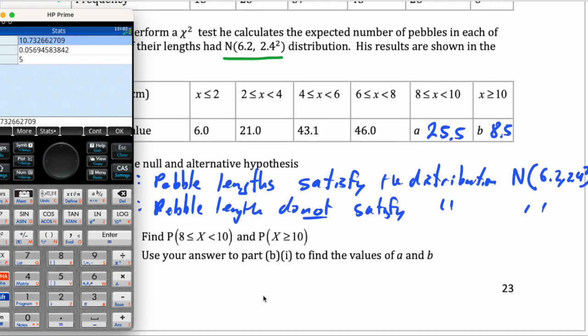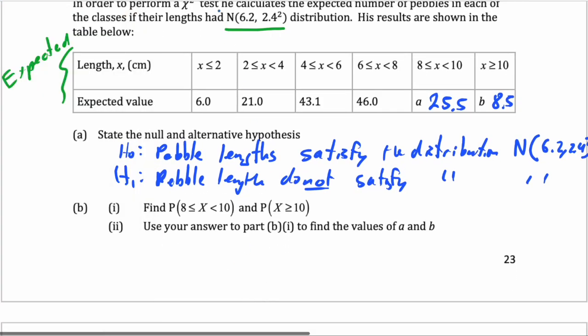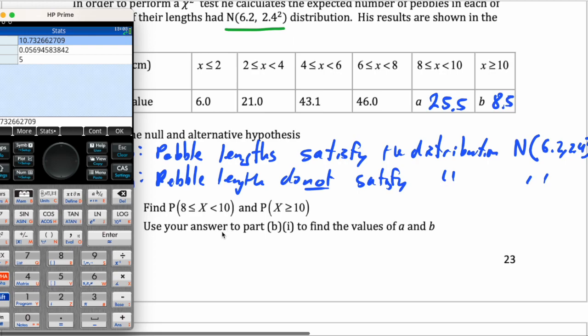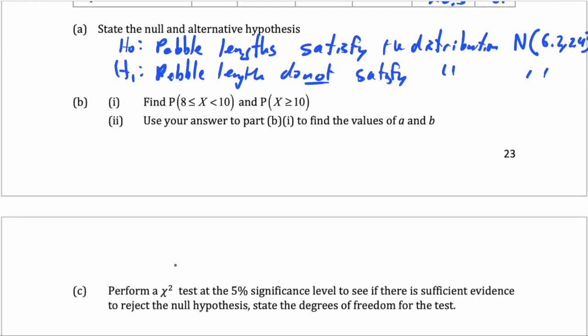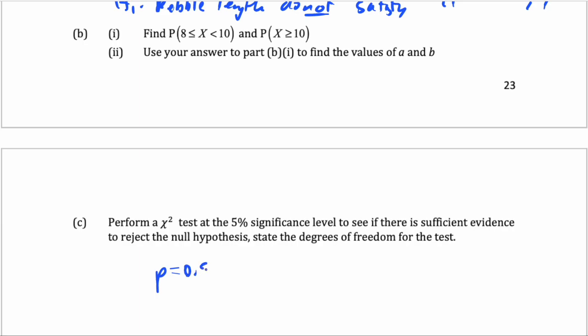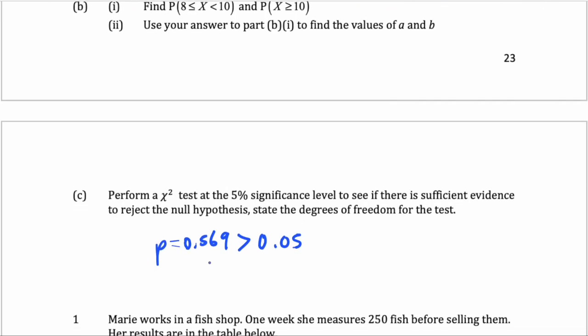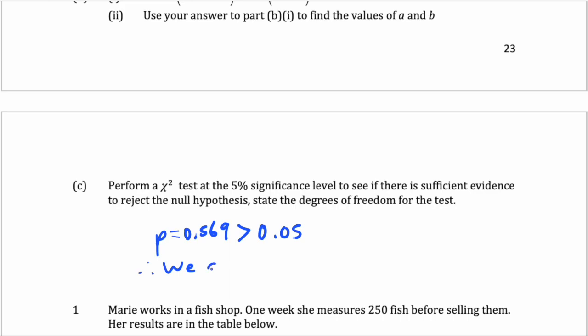The p-value is 0.569. P equals 0.569, which is greater than the significance level. And remember, if chi is high or p is low, we reject H0. This is not low. It's higher than the significance level. So we do not have sufficient evidence to reject the null hypothesis.